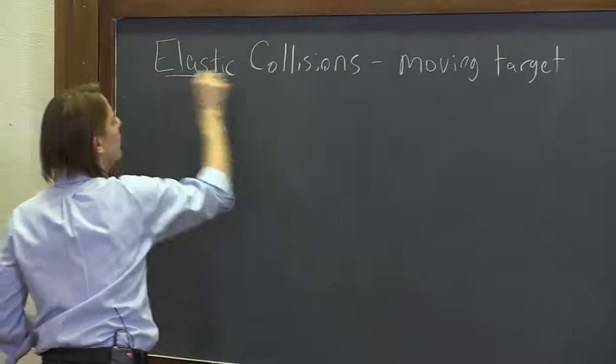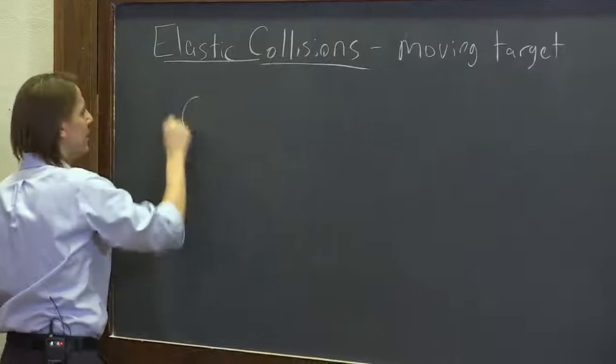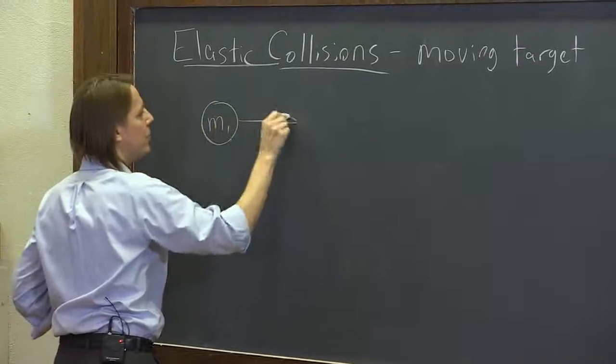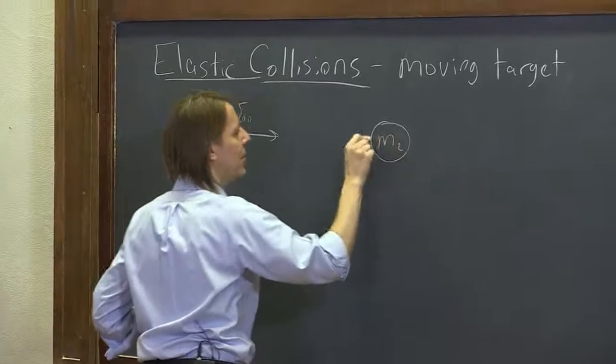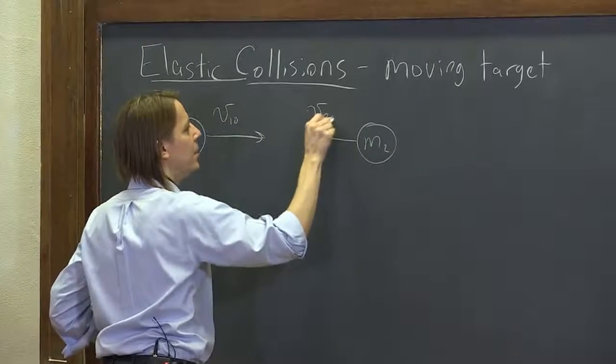All right, so let's see. That would look something like this. Mass 1 coming in at V1 knot and mass 2 coming in at V2 knot.